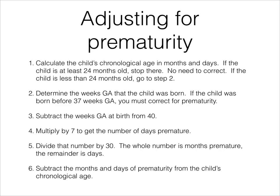If they are at least 24 months old, then you need to determine the weeks gestational age that the child was born. If you verify that the baby was born at least four weeks early — that is, before 37 weeks gestational age — then you proceed with adjusting for prematurity.